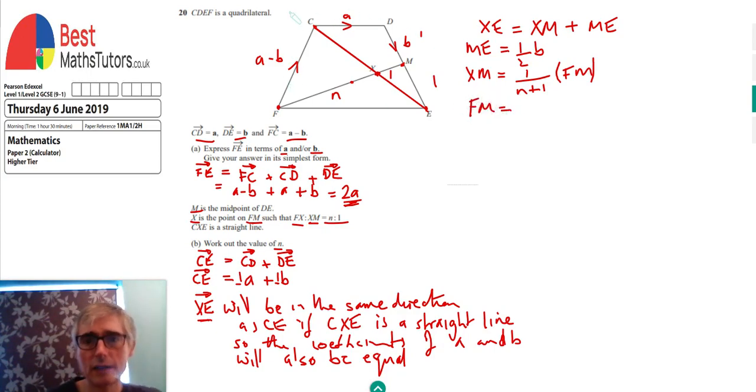FM, I can take any path. So FM is FC, which is A minus B, plus the A, and then plus half of the DM, which is plus half of B. If I tidy that up, I'm going to get 2A minus half B.